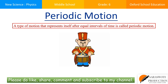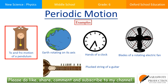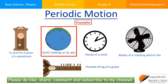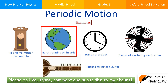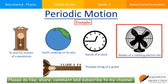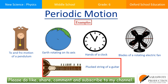Number three: periodic motion. A type of motion that repeats itself after equal intervals of time is called periodic motion. Examples of objects undergoing periodic motion are the to-and-fro motion of a pendulum, the earth rotating on its axis, the hands of a clock, the blade of a rotating electric fan, and the plucked string of a guitar.